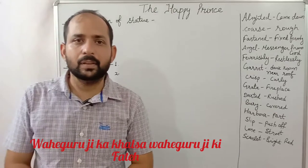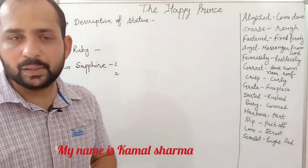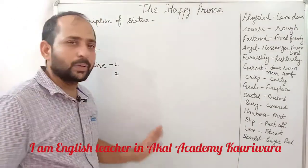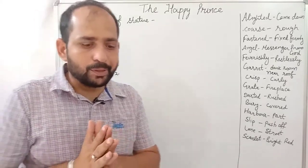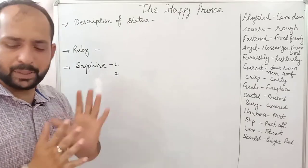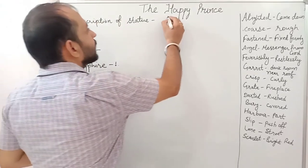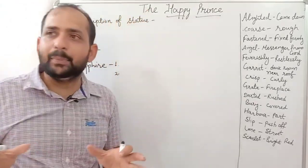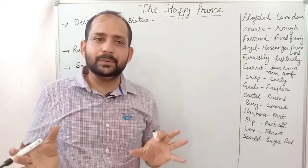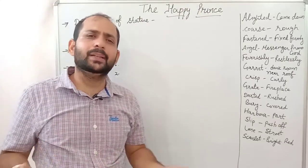Good afternoon students. Today we are going to discuss a chapter of the book — the chapter name is 'The Happy Prince.' Firstly, I want to give you a brief description of the statue of the Happy Prince. Looking at the title: 'happy' means a person who always remains happy, and 'prince' — he was a person who remained happy when he was alive.